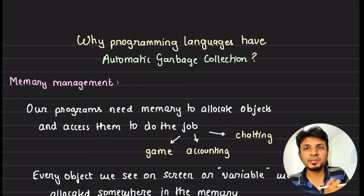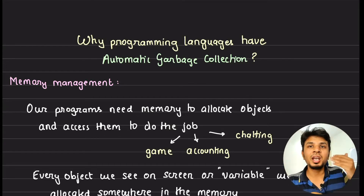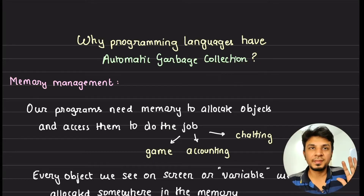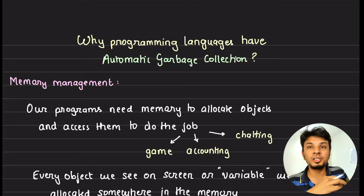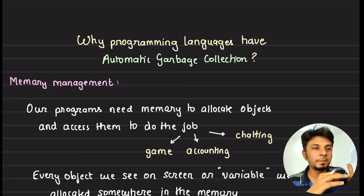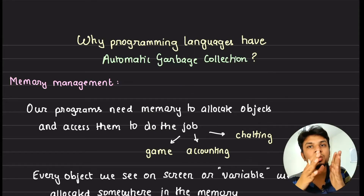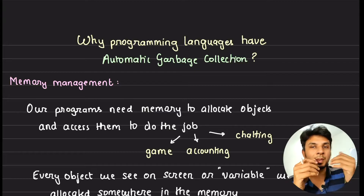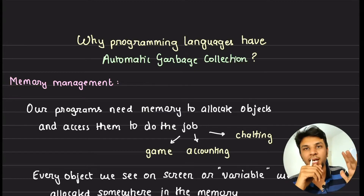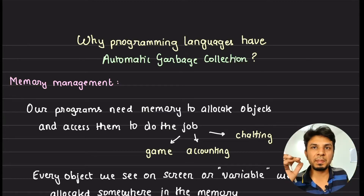We know how important garbage collection is for any programming language. In this video we understand why a programming language needs automatic garbage collection in the first place. We start with the basics of memory management, then look at the constructs that a language provides to do basic garbage collection and why that is unreliable, which leads to the need for a programming language to have automatic garbage collection.